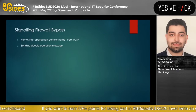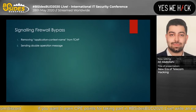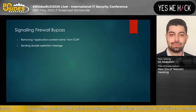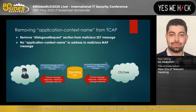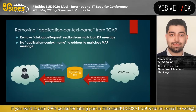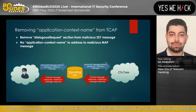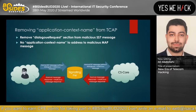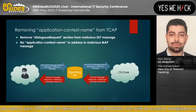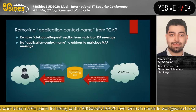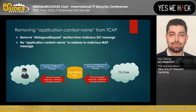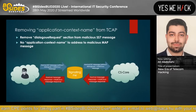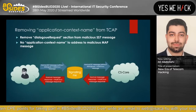To perform the bypass, we need to remove the Application Context Name from the TCAP message, or send a double operation message. For the first method, we remove the Dialog Request section from the malicious SS7 message, so there will be no Application Context Name pointing to the malicious SS7 MAP message — as you can see here.